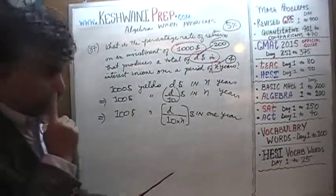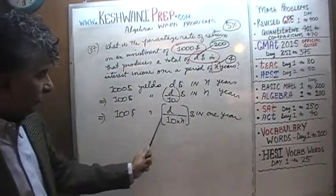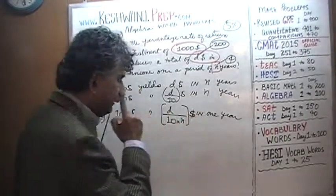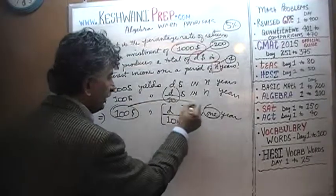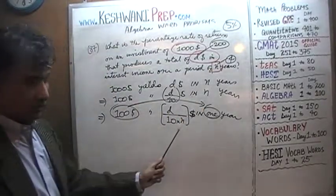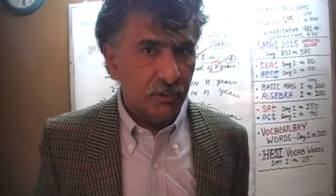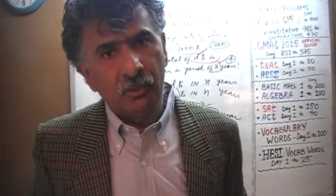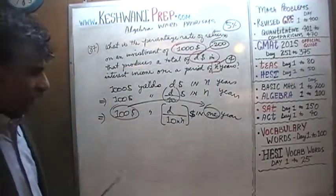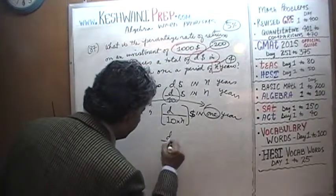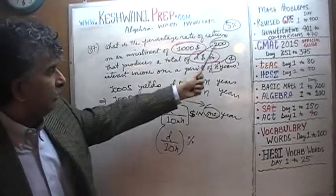If our formula gives us 5, we are all set. Even though it has a dollar sign, why is D over 10N a percentage? Because this is the amount of money you'll earn on an investment of $100 in 1 year — and whatever you earn on $100 in 1 year is referred to as a percentage rate of return. If somebody tells you this investment yields 7%, they mean you earn $7 in 1 year on $100.